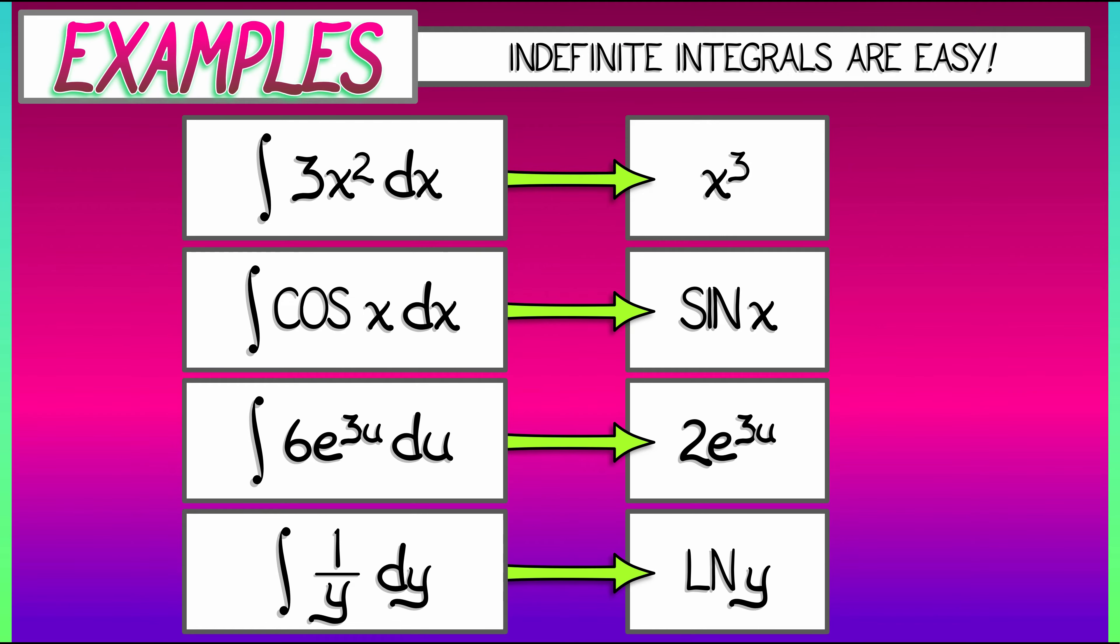In each of these cases, we can add a constant, a plus c, to these antiderivatives, and when we differentiate that, the constant goes away. That means that in all these cases, we need to add a plus c. This is more important than you might think. Don't forget that.